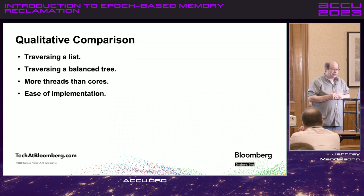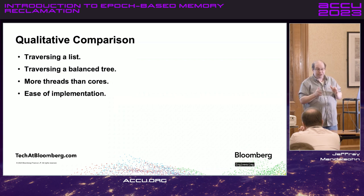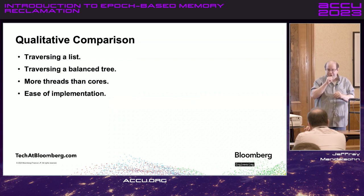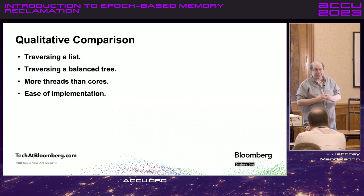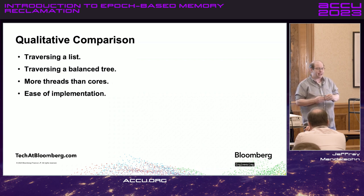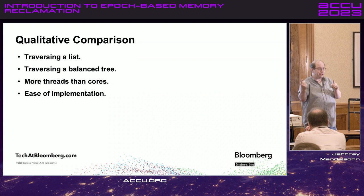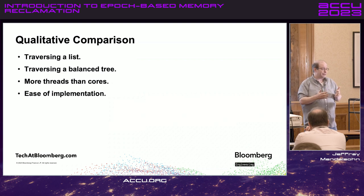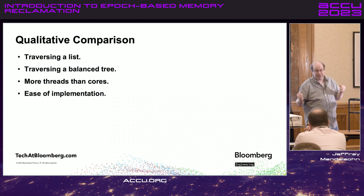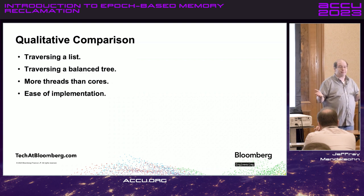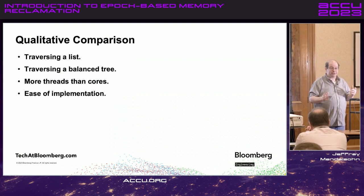Epoch-based is probably better than hazard pointers in those examples, but they're very close. One place where epoch-based algorithms really fail is when you have many more threads than cores accessing your data structure. The problem is you can't reclaim memory until all threads have potentially finished accessing it. If a thread gets swapped out frequently, the period you're holding that memory becomes very large — you can reach a situation with an almost unbounded amount of memory waiting to be reclaimed, which is the chief argument against epoch-based memory reclamation.